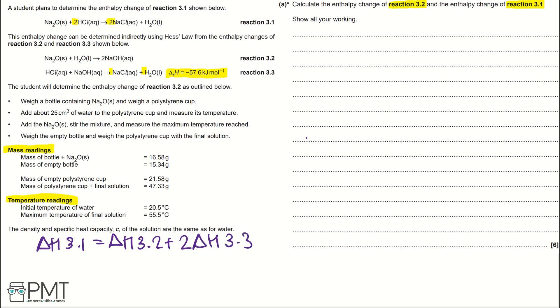We know this because if we look at reaction 3.2 and 3.3, we can combine them to get reaction 3.1. But we need to times 3.3 by 2 because if we look at the molar ratios, we have 2 HCl and 2 NaCl in reaction 3.1. But in reaction 3.3, we've only got 1, hence we need to times by 2.